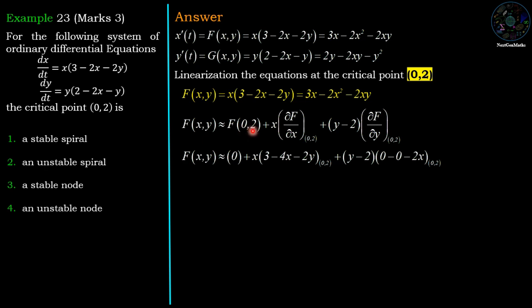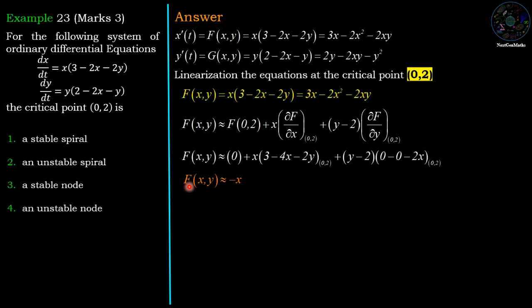Evaluating f(0, 2) gives 0. The partial derivative of f with respect to x is 3 − 4x − 2y, which at (0, 2) gives 3 − 0 − 4 = −1. The partial derivative of f with respect to y is −2x, which at (0, 2) gives 0. Therefore the linear approximation is f(x, y) ≈ −x.